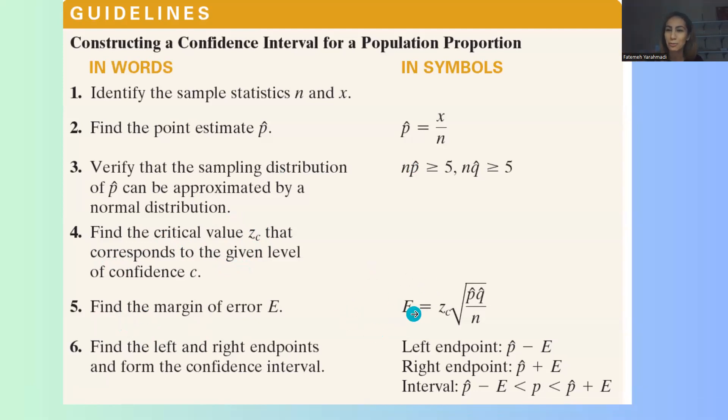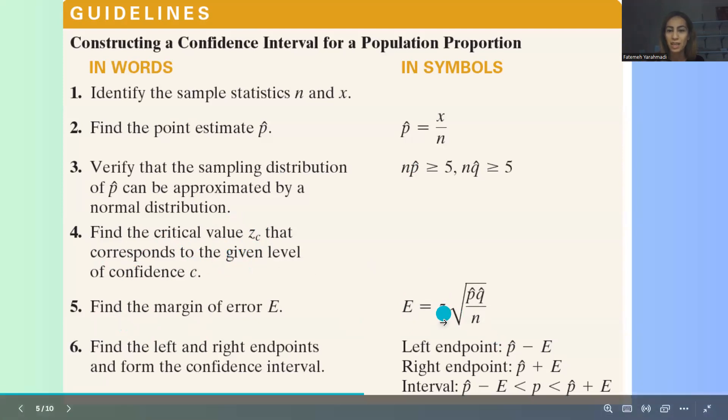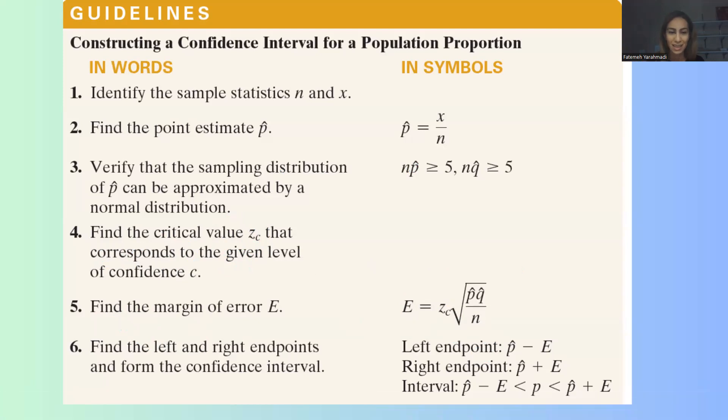Then we need to move to the next step and find the margin of error, which is the distance. We have all the information. E, or margin of error, is equal to z sub c, or the critical value that you found in step 4, and then you multiply that by the square root of p-hat q-hat divided by n.